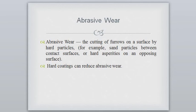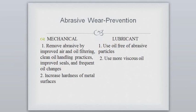Next is abrasive wear. Abrasive wear is a cutting of furrows on the surface by a hard particle, such as sand or hard asperities contacting the surfaces. Hard coating can reduce abrasive wear. Preventions: mechanically, remove abrasives by improved air and oil filtering, clean oil handling practices, improved seals, and frequent oil changes; increase hardness of metal surfaces. For lubricant, use oil free of abrasive particles and use more viscous oil.